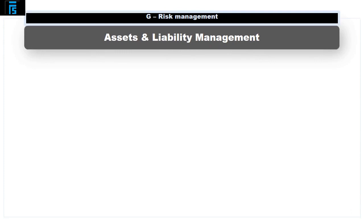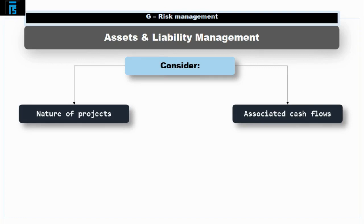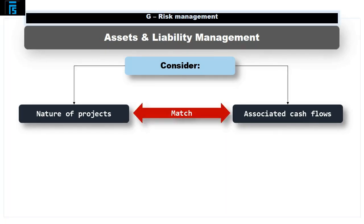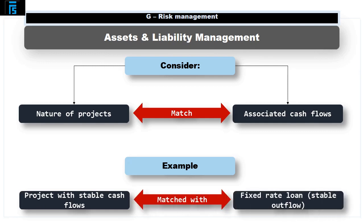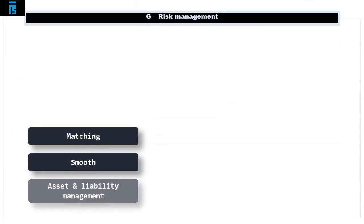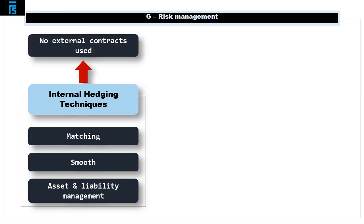Asset and liability management considers the nature of projects and the cash flows associated with them, and seeks to match the nature of those cash flows with the nature of the finance. For example, if a project is likely to generate very stable cash flows, it makes sense to match this with stable outgoings — in other words, finance it with a fixed rate loan. Matching, smoothing, and asset and liability management are all examples of internal hedging techniques. In other words, external contracts are not used specifically to manage interest rate risk.